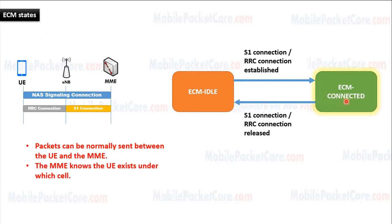First, let's learn what ECM connected state is. The signaling connection in the control plane between the MME and the UE is called the NAS signaling connection, and it is composed of the S1 connection between the eNodeB and the MME, in addition to the RRC connection between the UE and the eNodeB. If this NAS signaling connection, composed of the RRC connection and the S1 connection, is established, the UE will move to ECM connected state.